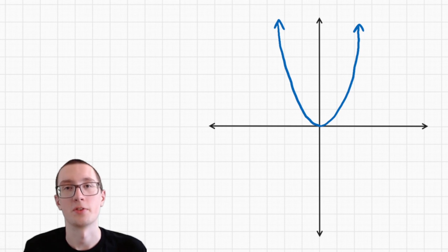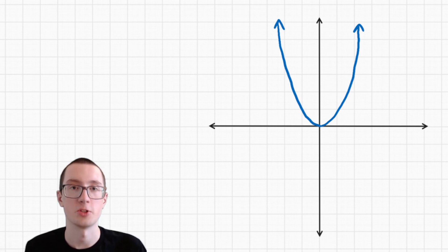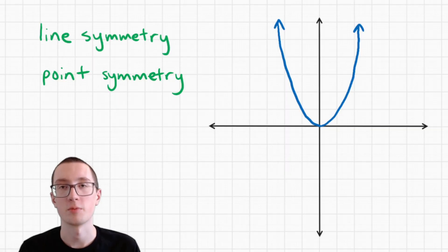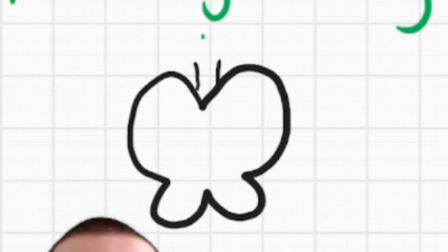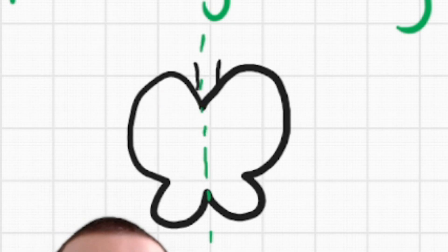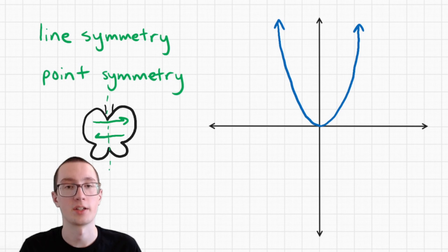You may have first learned symmetry back in kindergarten when you learned that a butterfly is an example of symmetry. Well, it's a little different in algebra. In algebra, graphs can have two types of symmetry: line symmetry and point symmetry. When you think about a butterfly having symmetry, that's called line symmetry — you can draw a line through it and it looks the same when you reflect across it, like a mirror image of itself.